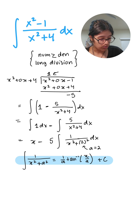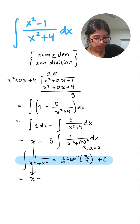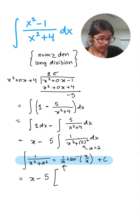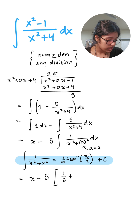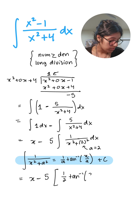Applying the right-hand side of the formula, we get x, then 1/a which is 1/2, times arctan(x/a) which is x/2, plus C. Simplifying this gives us our final answer.